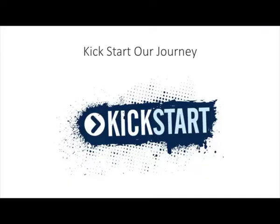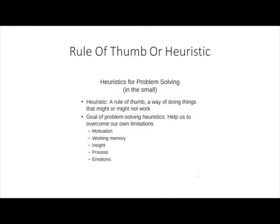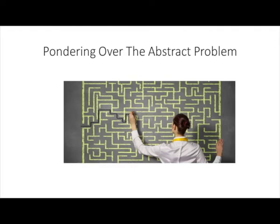Once we have comprehended the problem to our satisfaction, we may use specific examples to kick-start our journey. This is a popular rule of thumb or heuristic. Instead of pondering over the abstract problem in a general context, we may pick a specific example of the problem and try to work out ways and means to solve it. If the approach works, we can try to generalize the solution to a more general context. Doing so will give us confidence.